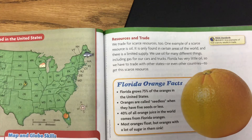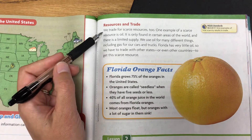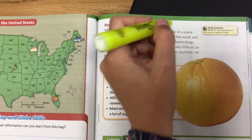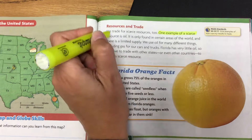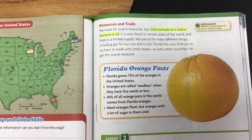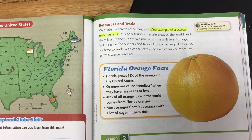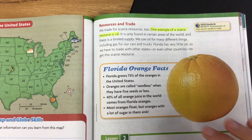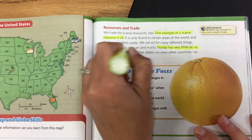Resources and trade. We trade for scarce resources too. One example of a scarce resource is oil. It is only found in certain areas of the world and there is a limited supply. We use oil for many different things, including gas for our cars and trucks. Florida has very little oil, so we have to trade with other states or even countries to get this scarce resource. We can highlight that important information as well.